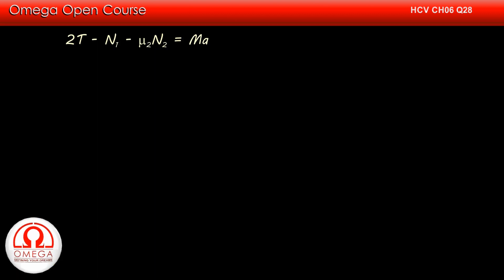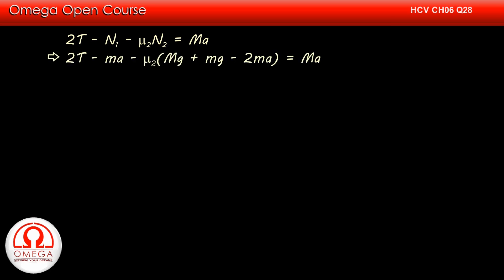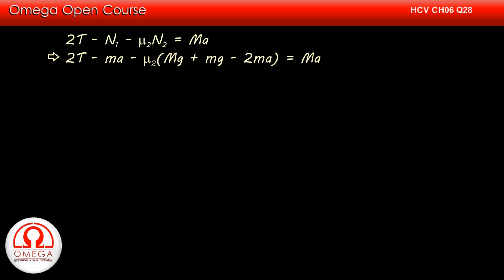Writing the equation for motion of the bigger block in the horizontal direction, we get 2T − N1 − mu2·N2 = MA. Putting the value of N2, we get 2T − mA − mu2·(Mg + mg − 2mA) = MA.